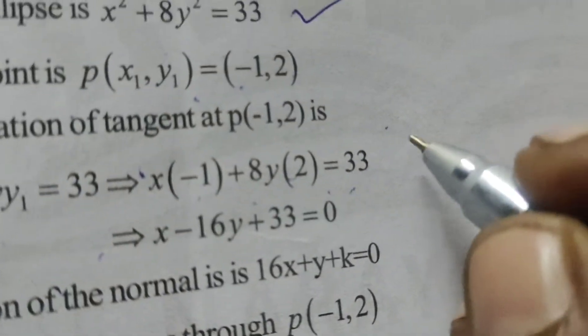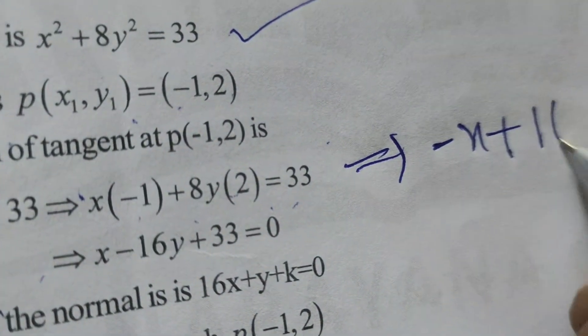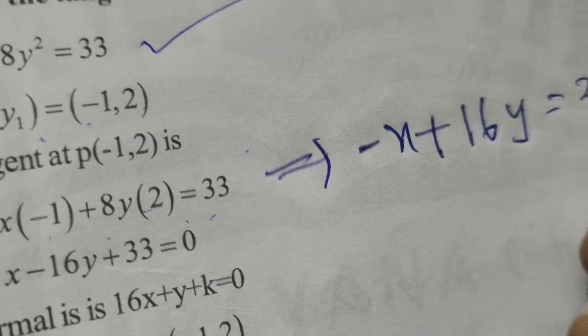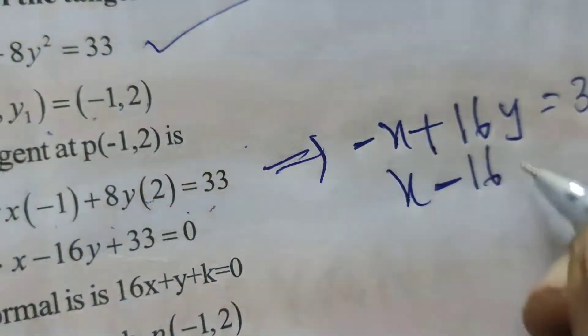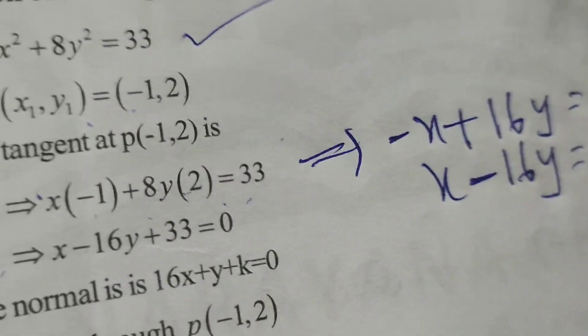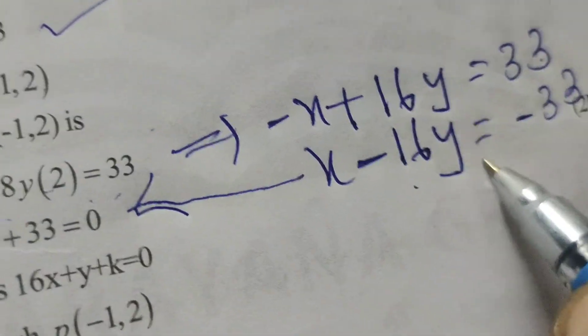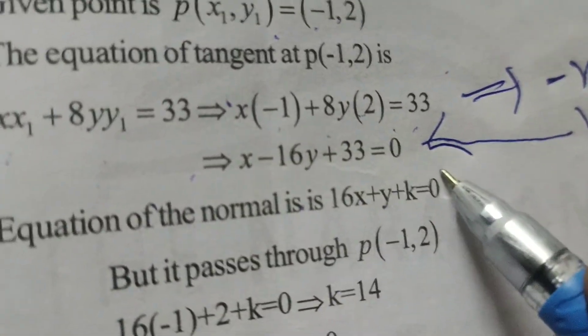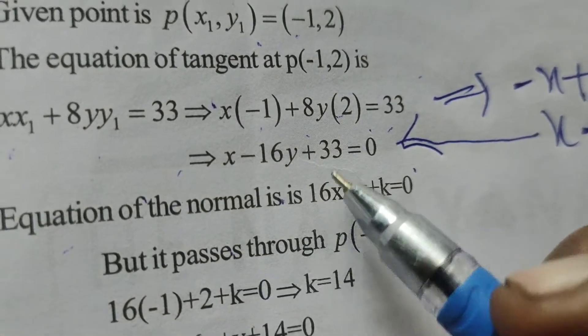we write this as -x + 16y = 33, then x - 16y = -33, which gives us x - 16y + 33 = 0. Now, the equation of the normal